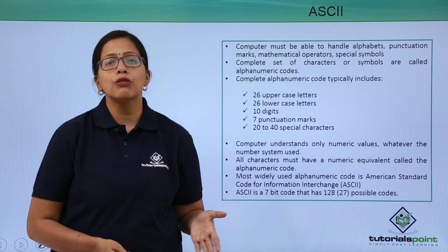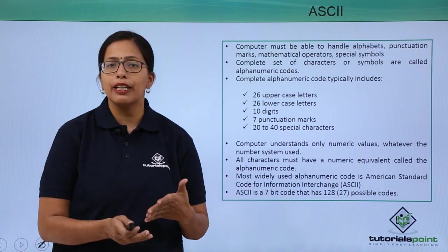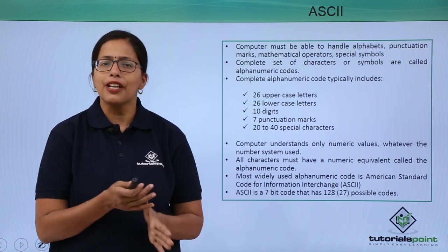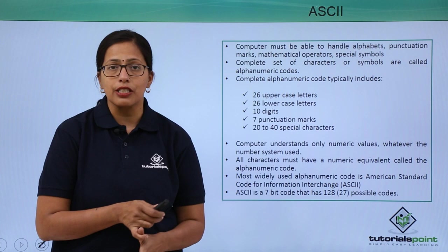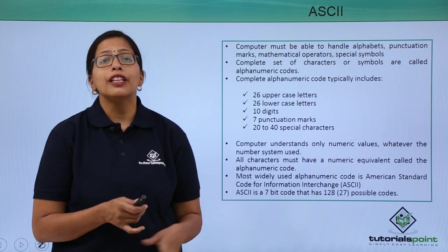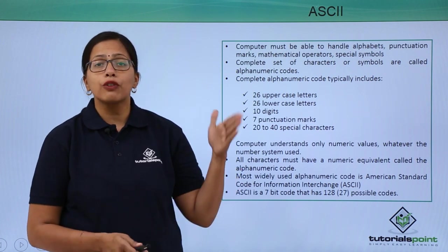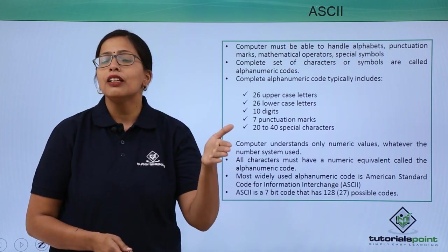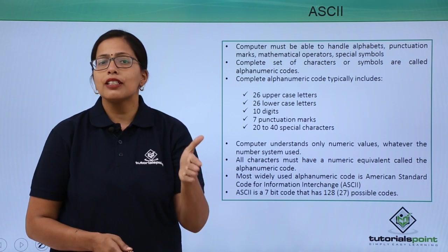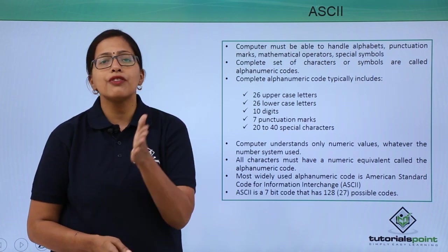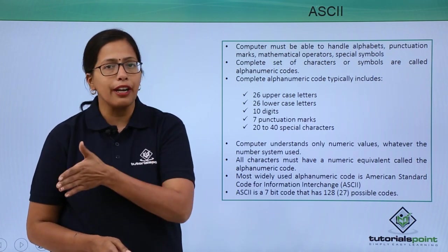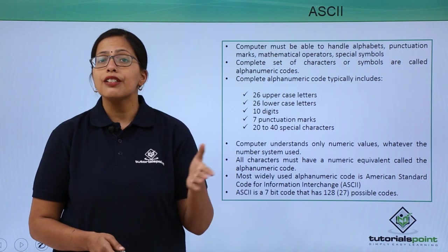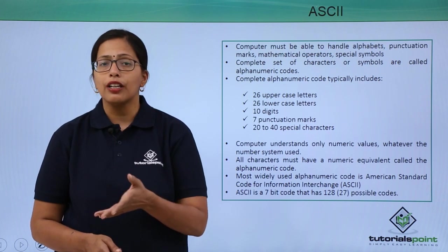Computers also need to handle alphabets, special characters, logical operators, and arithmetic operators. So they need to have a code for all these — a code that can be represented in the form of 0 and 1, because the computer understands only 0 and 1.